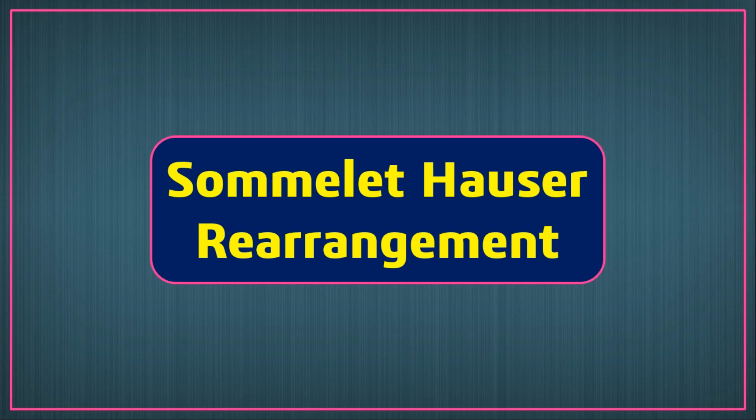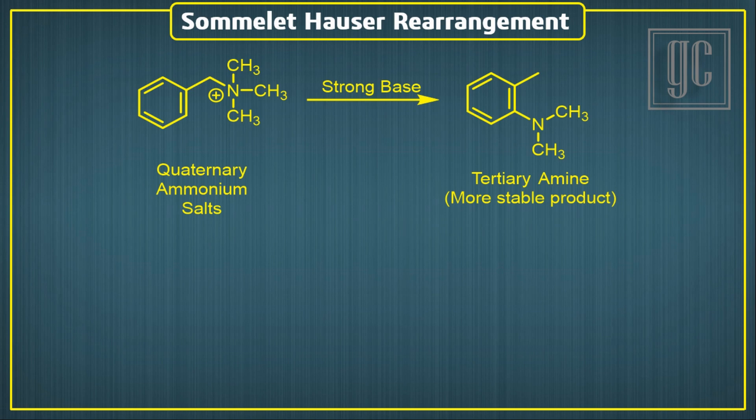In this video, we are going to discuss Sommelet-Hauser Rearrangement. Sommelet-Hauser Rearrangement takes place in Quaternary Ammonium Salts. Under basic conditions, Quaternary Ammonium Salts rearrange and form tertiary amine derivatives as the final product. The driving force for this rearrangement is to make a more stable uncharged molecule from a charged molecule.